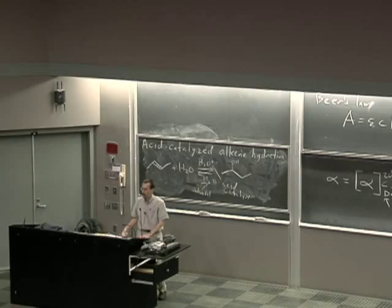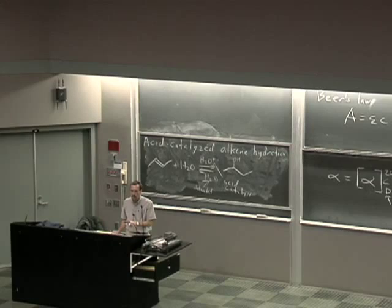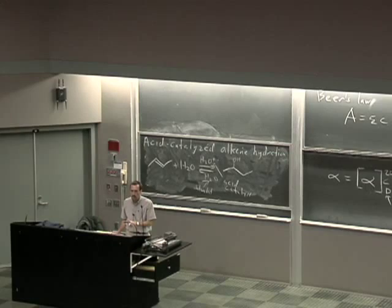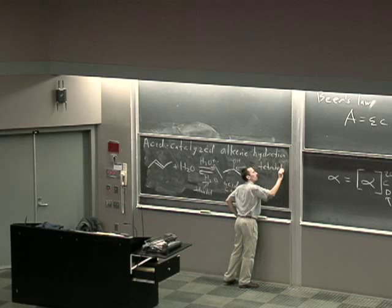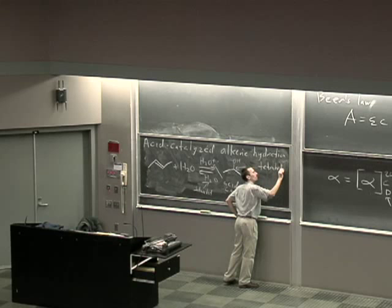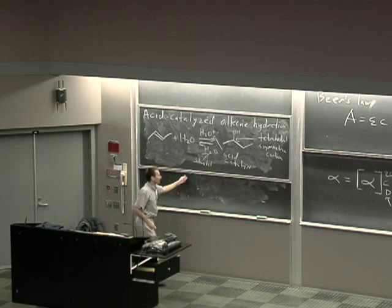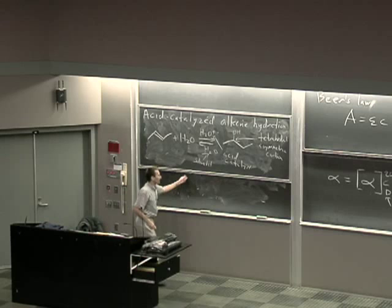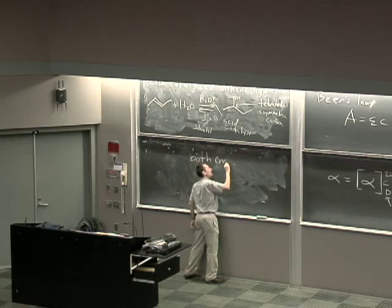Is 2-butenol chiral? Yes — regardless of how I draw it, this is a tetrahedral asymmetric carbon. I haven't specified which enantiomer I get, and in fact we get both enantiomers in exactly equal amounts. We get the racemic compound.